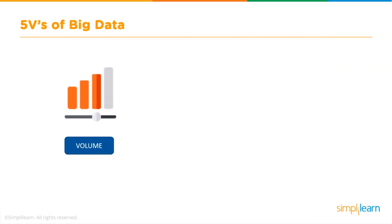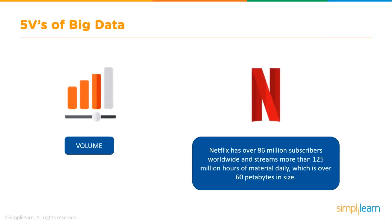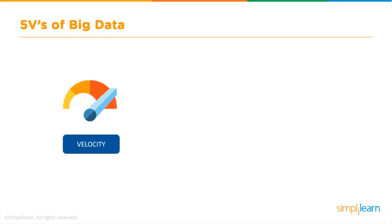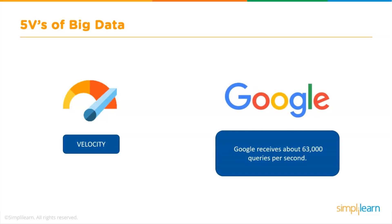The first of the 5 V's of Big Data is Volume, which refers to the quantity of data available — the initial size of data collected, which can be thought of as the foundation of Big Data. For example, Netflix has over 86 million subscribers worldwide and streams more than 125 million hours of content, which is over 60 petabytes in size. The second V is Velocity, which describes the rate at which data is created and transferred. For example, Google receives about 63,000 searches per second.